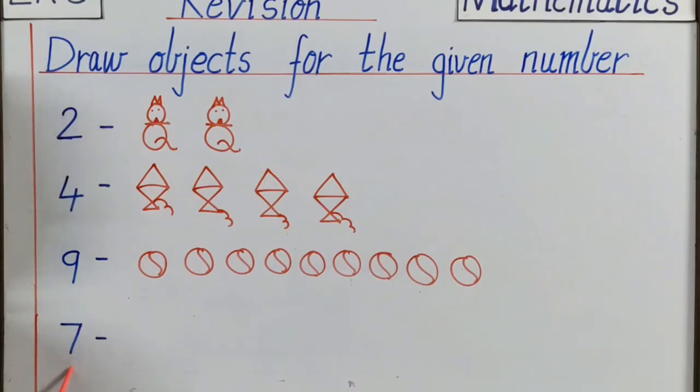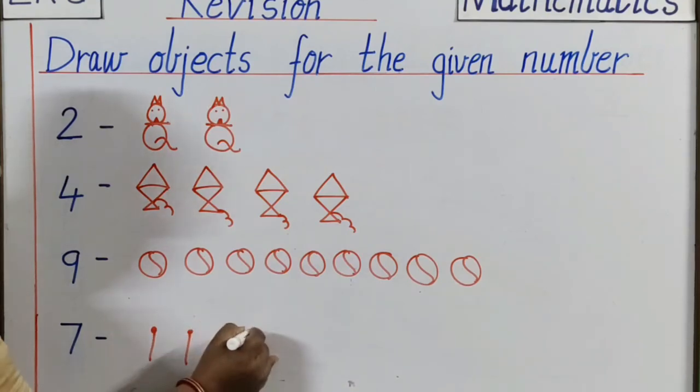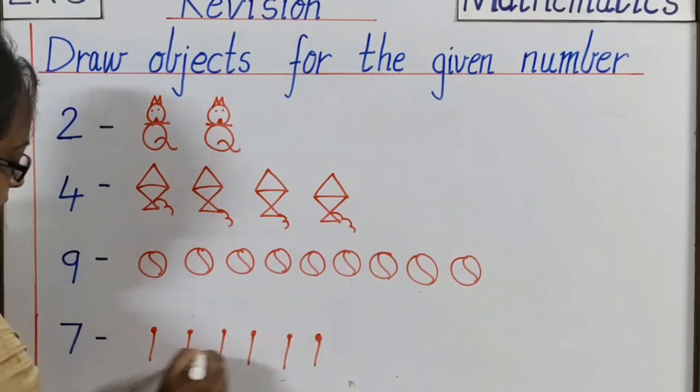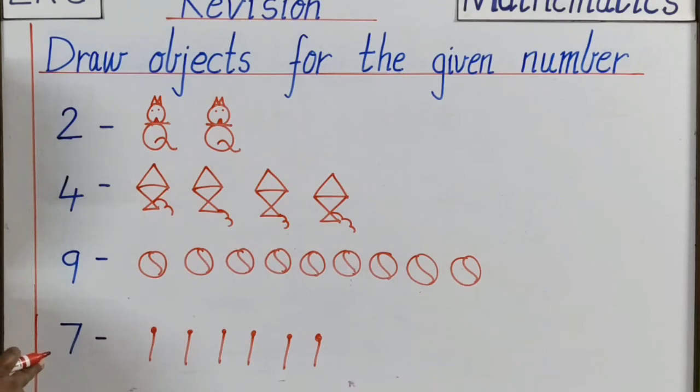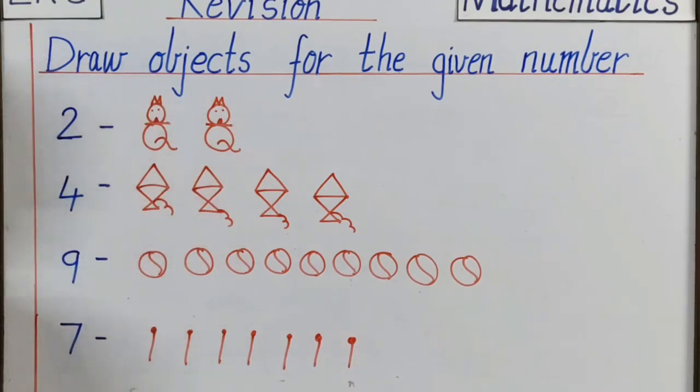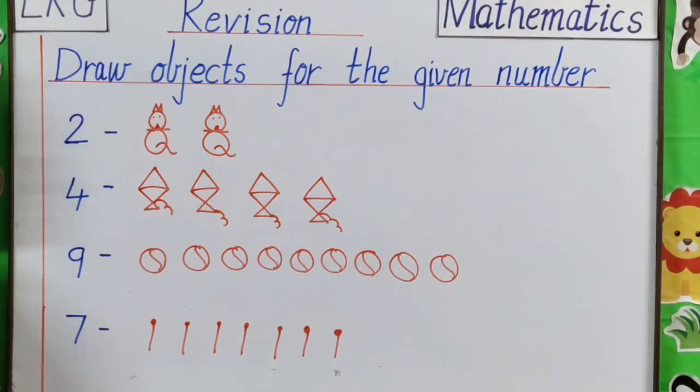Let's go to next number. Seven. We shall draw here seven pins. One, two, three, four, five, and six. But what number is here? It is seven. We have to draw one more. Let's see. One, two, three, four, five, six, and seven. We have finished drawing objects for the given number.